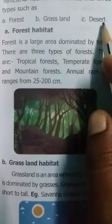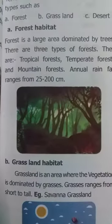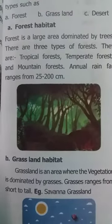Terrestrial habitat is classified into types such as forest, grassland, and desert. We will see this explanation in the next class. Thank you.